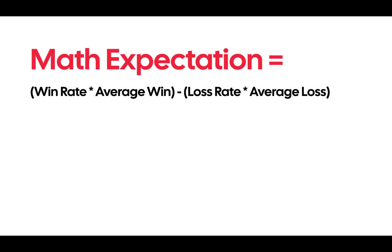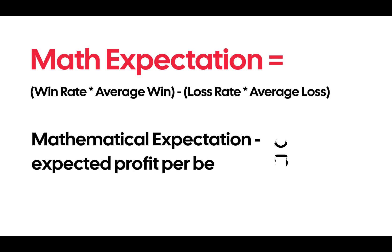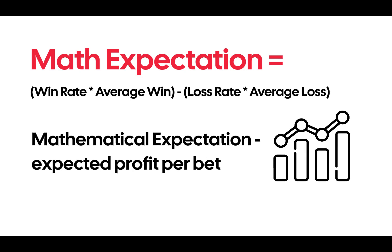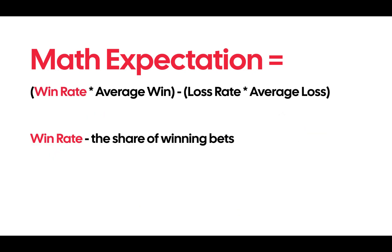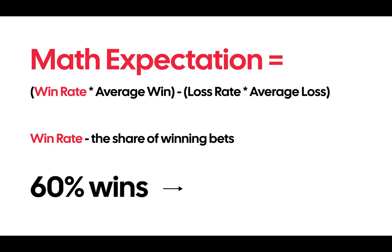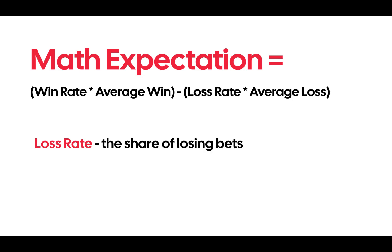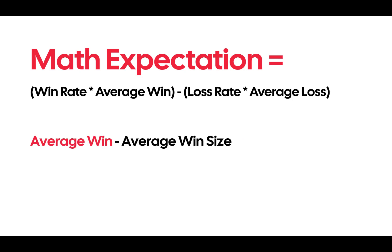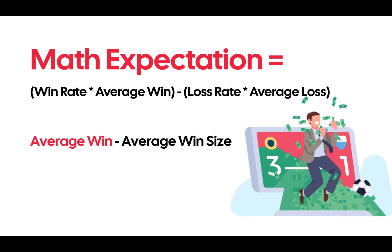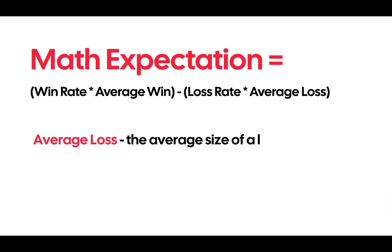First, let's look at the formula for mathematical expectation — the expected profit per bet. This metric helps you understand how much on average you will make or lose on a single bet over the long term. Win rate is the share of winning bets; for example, 60% wins means a win rate of 0.6. Loss rate is the share of losing bets — subtracting win rate from 1 gives you the loss rate. Average win is how much you earn on a successful bet; average loss is the average size of a loss on a losing bet.